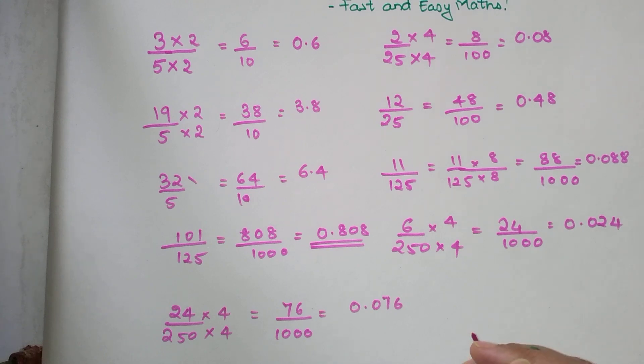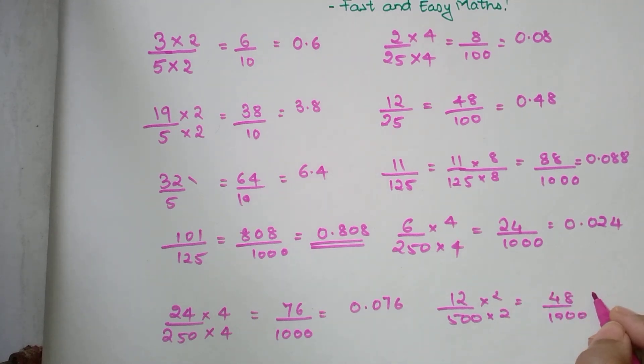When I have to divide 12 upon 500, I multiply by 2 so my denominator becomes 1000. I get 48 upon 1000, so my final answer is 0.048.